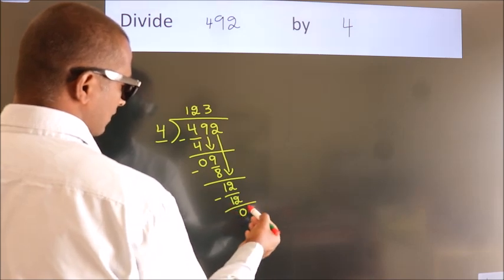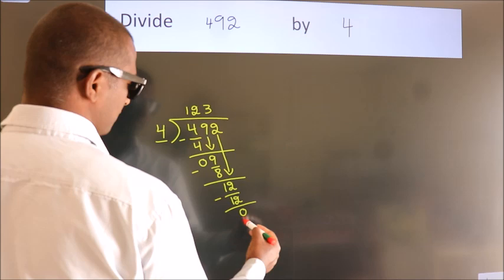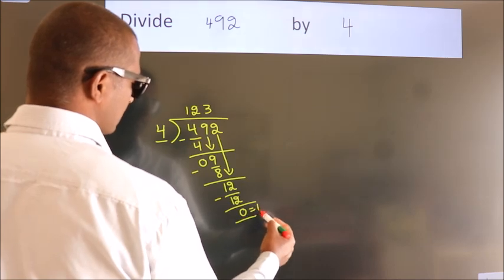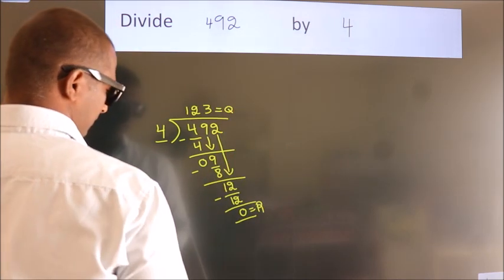After this, no more numbers to bring down. So, we stop here. This is our remainder. This is our quotient.